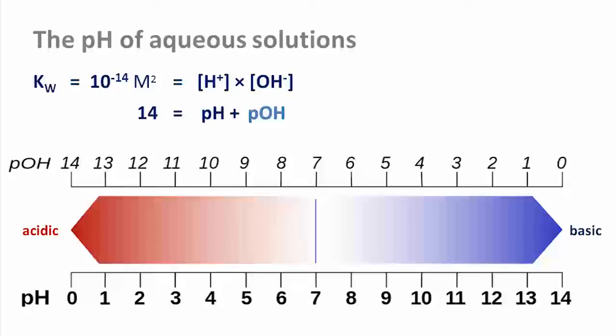If the pH is 7, the pOH is 7 as well. If the pH is 3, the pOH is 11. And if the pH is 10, pOH is 4.